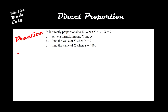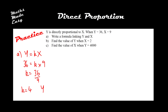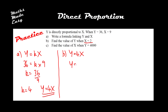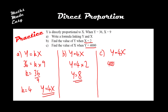Here are the answers. For part A, write Y equals KX. We know Y is 36 and X is 9, so K equals 36 divided by 9, giving K equals 4. Therefore Y equals 4X. For part B, Y equals 4X with X as 2, so Y equals 4 times 2, giving Y equals 8. For part C, Y equals 4X with Y as 4000: 4000 equals 4X, so X equals 4000 divided by 4, giving X equals 1000.